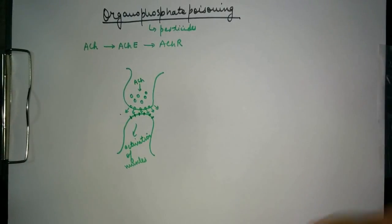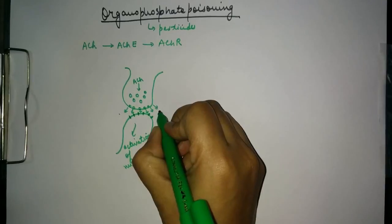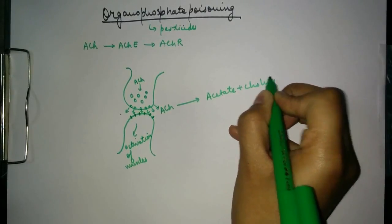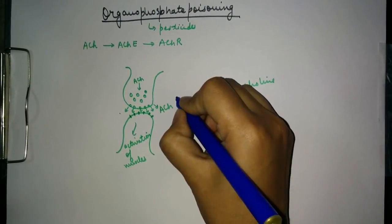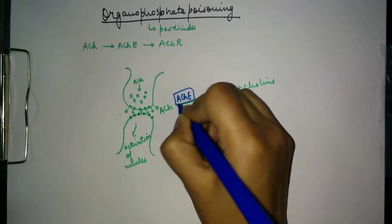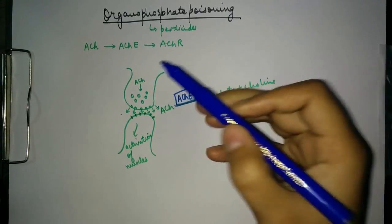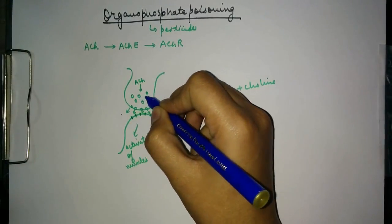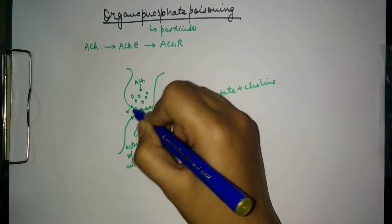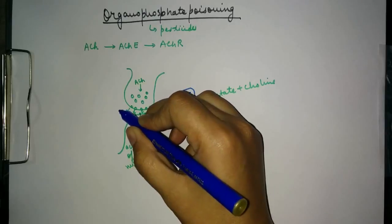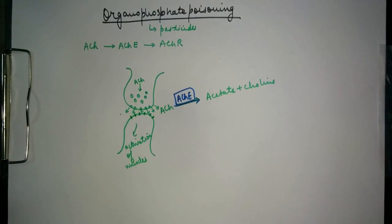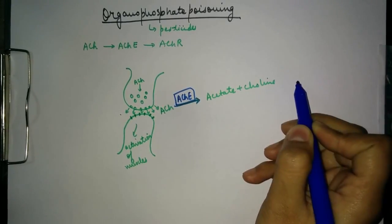When the required activation of the muscles has happened, this acetylcholine is converted into acetate and choline with the help of the enzyme acetylcholinesterase. So in summary: acetylcholine is produced in the neuron, stored in vesicles, released upon signaling, binds to receptors on the adjacent neuron to activate muscles, and is then degraded by acetylcholinesterase.